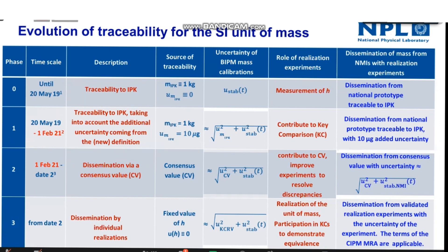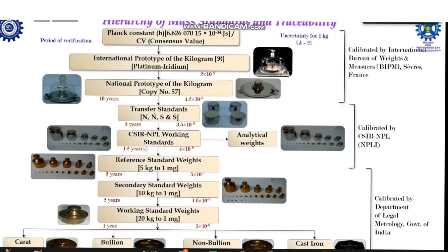I will show you the new certificate which we have received very recently. This is how we are presently working at the apex level. Looking at the same traceability chart shown before, nothing has changed from the NPK down to the commercial weights; however, at the top we find that traceability has now started coming from the consensus value.